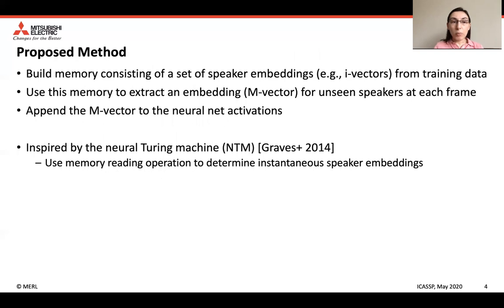In this work, we propose a method by building a memory consisting of a set of speaker embeddings — for example, i-vectors — from training data, and use this memory to extract an embedding, which we call m-vector, for unseen speakers at each frame. Once we compute these m-vectors, we append them to the neural net activations at hidden layers. This method is inspired by the neural Turing machine, proposed in 2014 by Graves et al. We especially use the memory reading operation to determine instantaneous speaker embeddings.